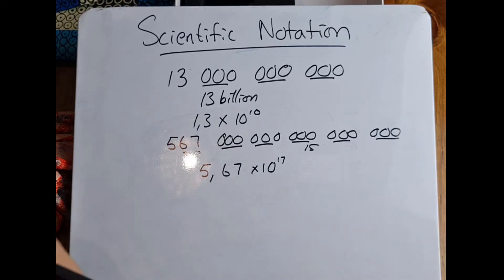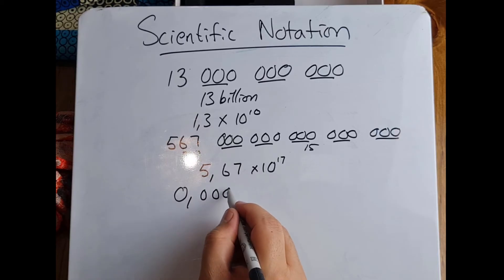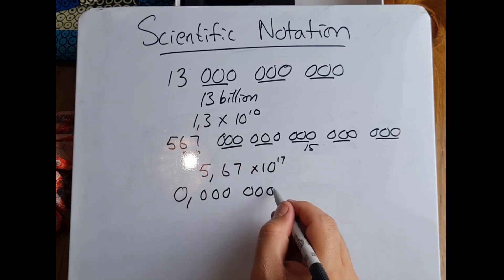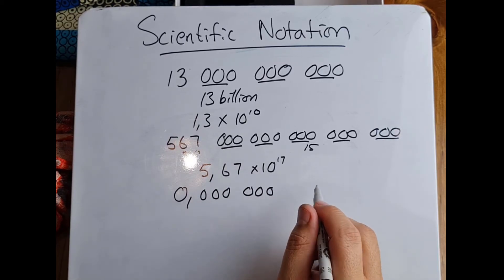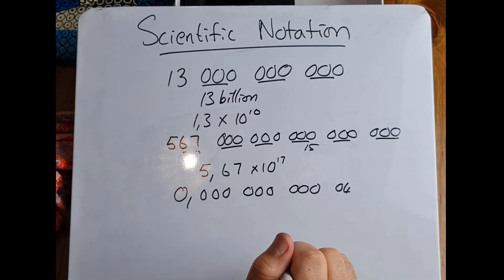But let's look at the other way as well. What if I've got a number that looks like this? Okay, how many zeros do I have? One, two, three, four, five, six, seven, eight, nine, 10, and then again over there, 11.